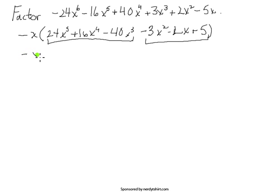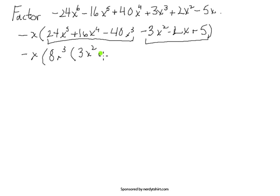The minus x you pulled out in the beginning is done — it's a monomial, you can't break it down further, so it just carries through. Looking at the first little group, 24, 16, and minus 40 have a common factor of 8, and all terms have at least x cubed, so you pull out 8x cubed, leaving 3x squared plus 2x minus 5. For the grouping to succeed, the second group must also yield that same trinomial — and it does, by pulling out the leading negative, which switches all the signs to give exactly 3x squared plus 2x minus 5.